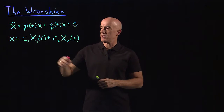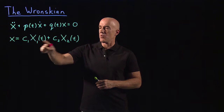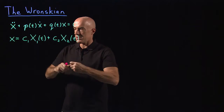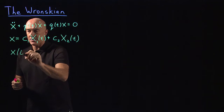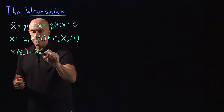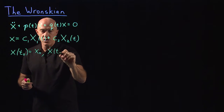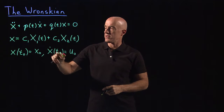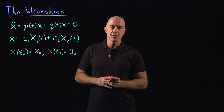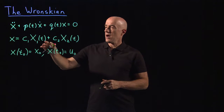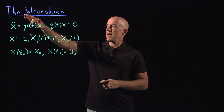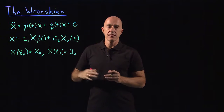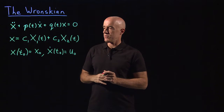By a general solution, I mean that by suitably choosing c1 and c2, we can satisfy the two initial conditions: x(t₀) = x₀ and x-dot(t₀) = u₀. The condition that allows us to do that goes by the name of the Wronskian — namely, that the Wronskian is not equal to zero.